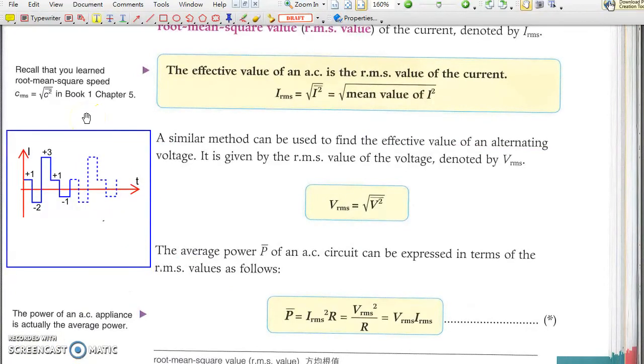Suppose there is a simple AC which varies as shown: positive 1, negative 2, positive 3, positive 1, negative 1, and repeats. Positive 1, negative 2, positive 3, positive 1, negative 1. So that in one period...